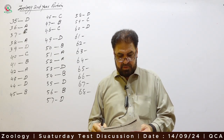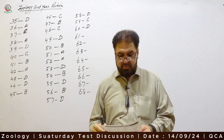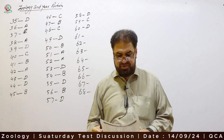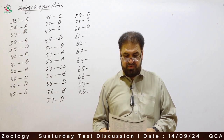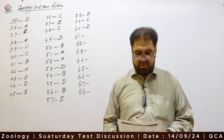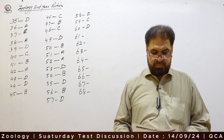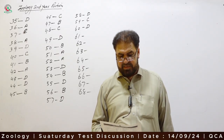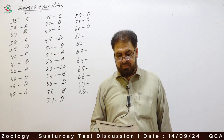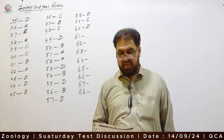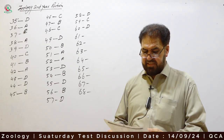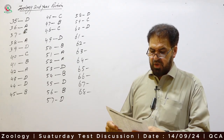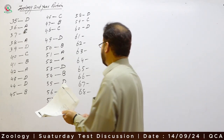Question 61: The secretions of which of the following are alkaline in nature — seminal vesicles, Cowper's glands, prostate glands, or both A and B? Seminal vesicles and Cowper's glands secrete alkaline secretions. Option D is correct.